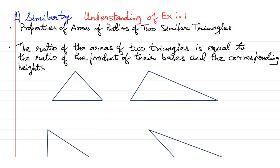Let us understand Exercise 1.1. Before we start, let us revise the properties of areas or ratios of two similar triangles. It states that the ratio of the areas of two triangles is equal to the ratio of the product of their bases and the corresponding heights. Let us say these are two triangles: triangle ABC and triangle PQR.